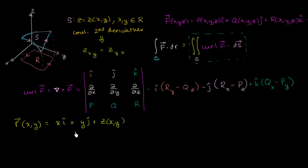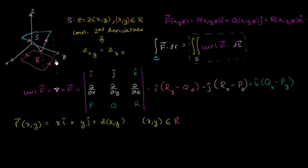Whenever you do a parameterization of a surface, you have to think about the constraints on the domain for your parameters. The constraints are that every coordinate pair x, y has to be a member of this region R. Any x, y pair that is not a member of R we're not going to consider — only the z values of x, y pairs where x, y are part of this region.